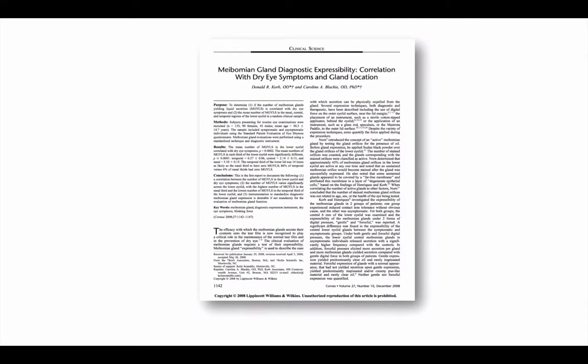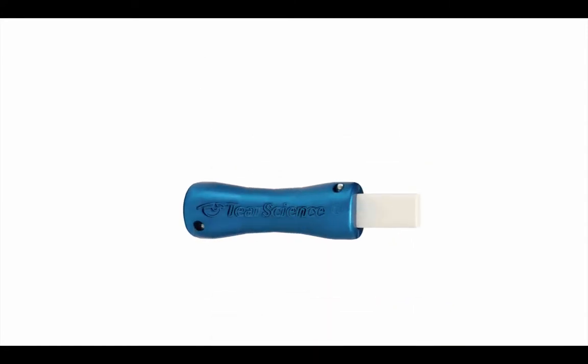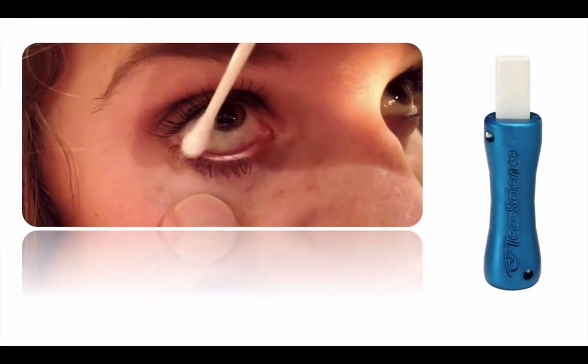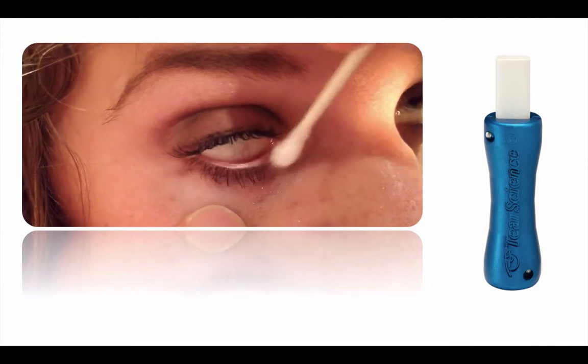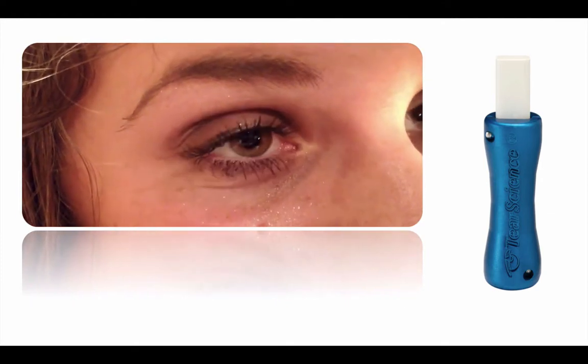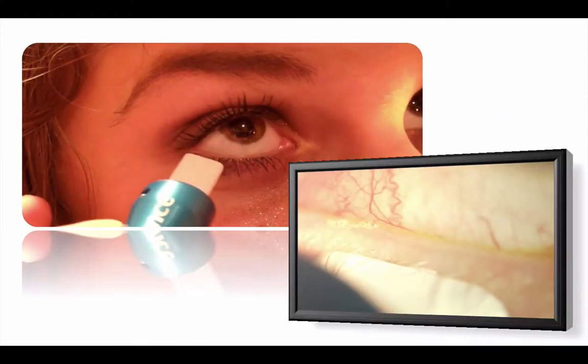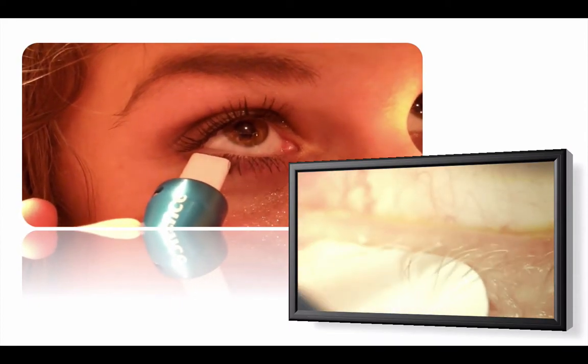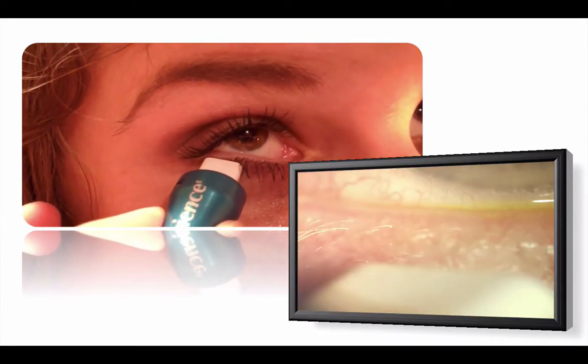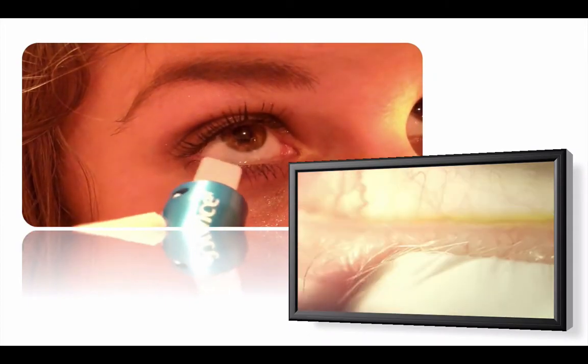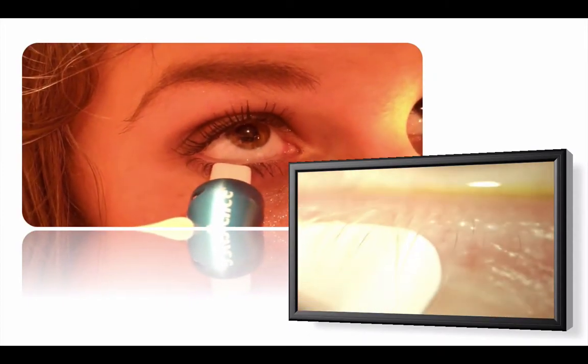Korb and Blackie evaluated 133 subjects. They looked at the patient's symptoms and evaluated the amount of meibomian glands yielding liquid secretions using an instrument that we can get from TearScience. They exerted 1.25 grams per millimeter squared of pressure to express the glands. 1.25 grams per millimeter squared is key because that's about the most pressure that a patient can exert on their own glands when they blink deliberately and forcefully.